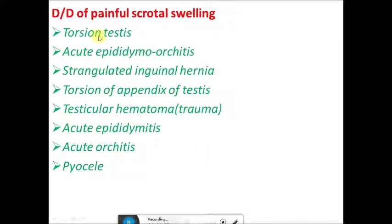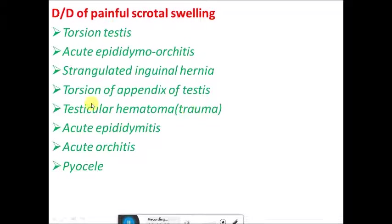The differential diagnosis of painful scrotal swelling includes: torsion testes, acute epididymal orchitis, acute epididymitis (inflammation of epididymis alone), acute orchitis, torsion of appendix of testes (where only the appendix of the testes is rotated), testicular hematoma following trauma, and pyocele. When this question is asked, enumerate these diagnoses and write one or two points about each.